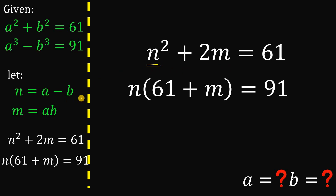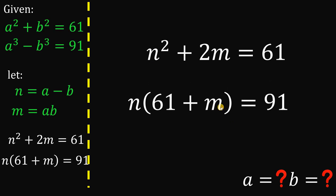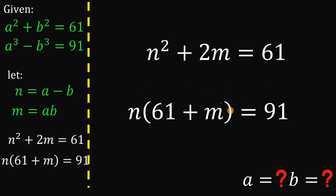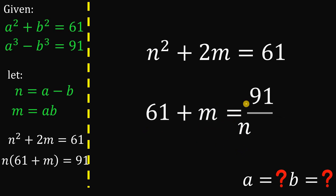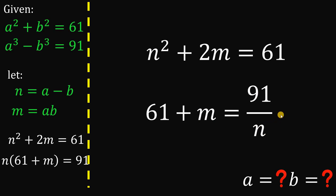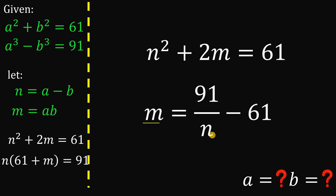Take note that n is a minus b and m is a times b. From the second equation, let's solve for the value of m in terms of n. Dividing both sides by n gives us 61 plus m equals 91 over n. Subtracting 61 from both sides gives the value of m as 91 over n minus 61.